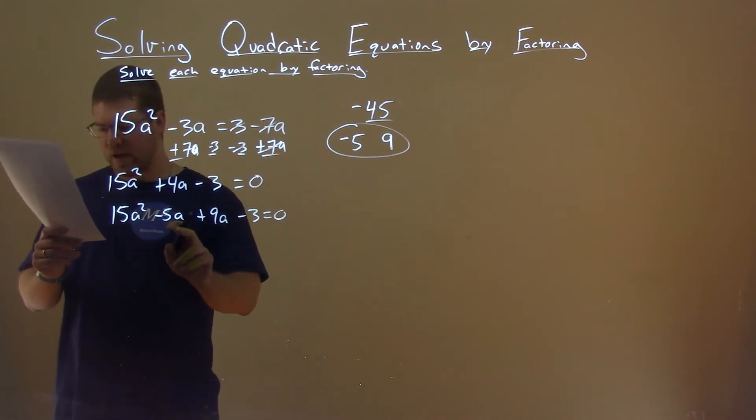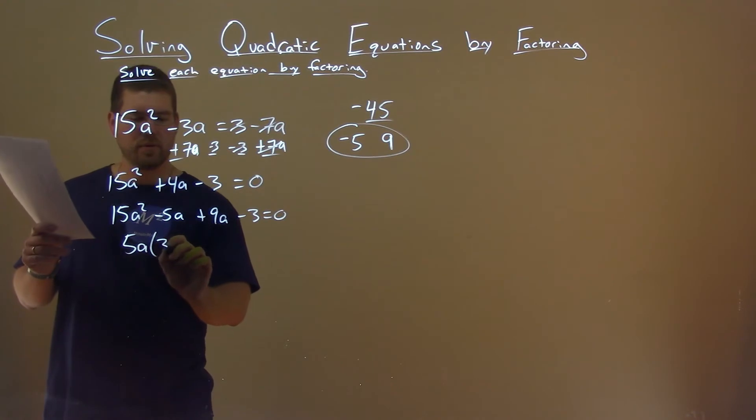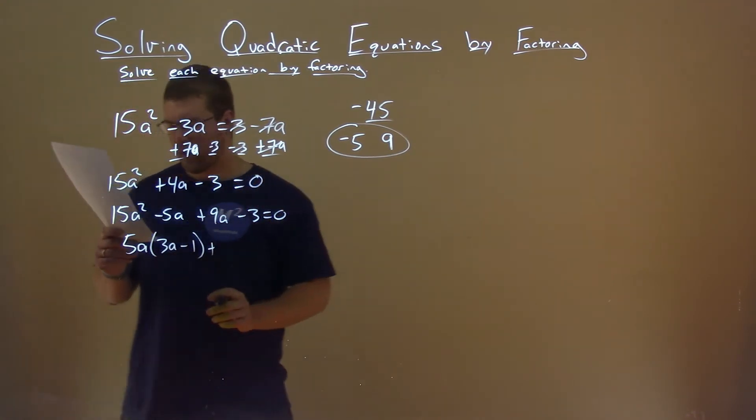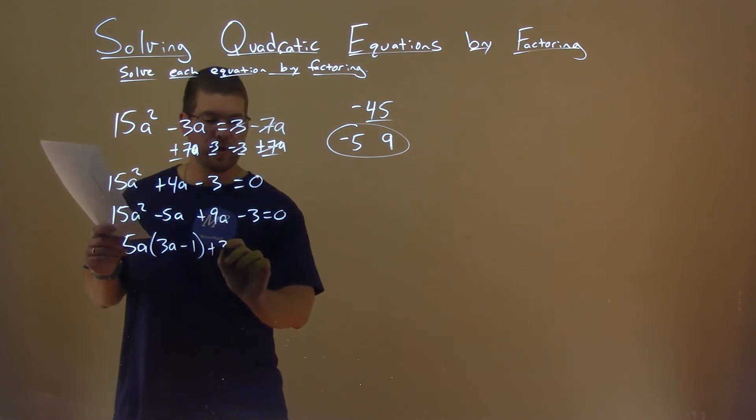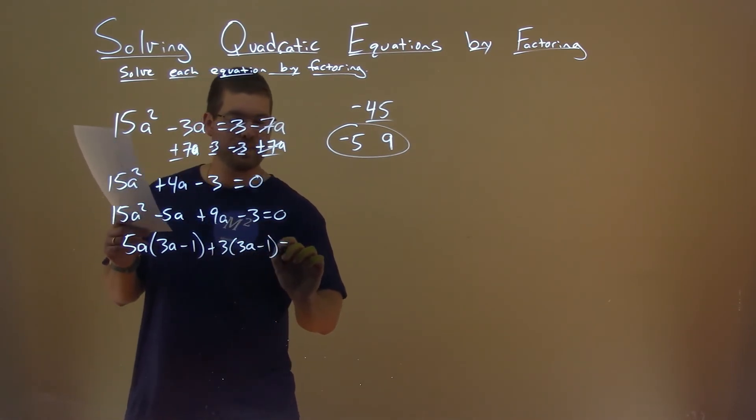15a² and 5a both have a 5a in it. I pull out 5a, and I'm left with 3a - 1. The second part here, both have a 3 in it. I pull out a 3, and I have 3a, again, minus 1, and that's equal to 0.